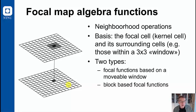Neighborhood operation is another name for focal map algebra function. The basis here is the focal cell, the dark marked cell, and its surrounding cells. Very often a three by three cell is used, so the first order neighborhood are used to generate a new value for the pixel value.